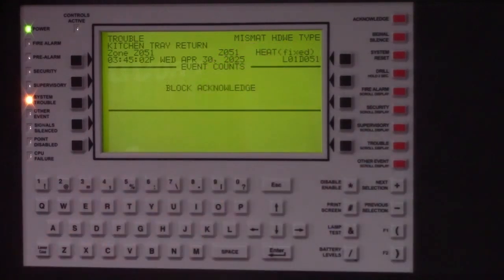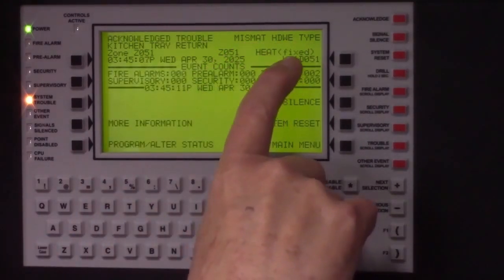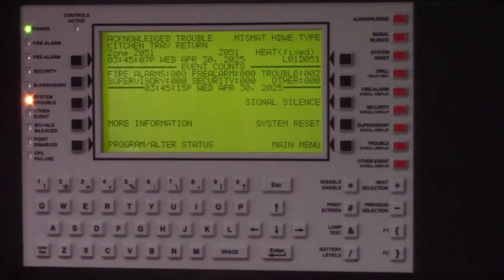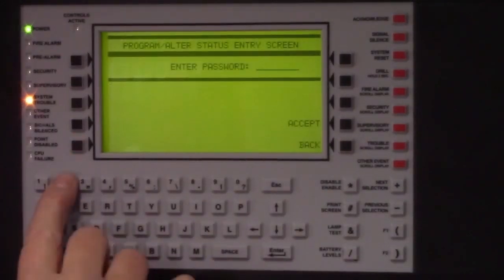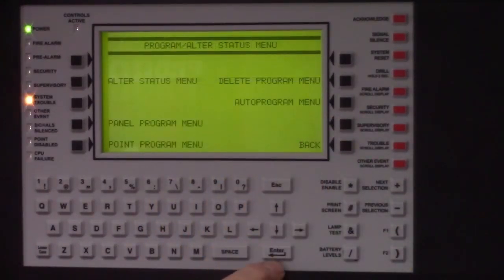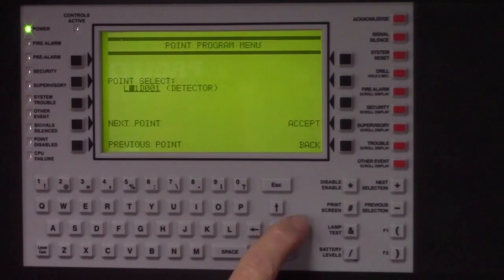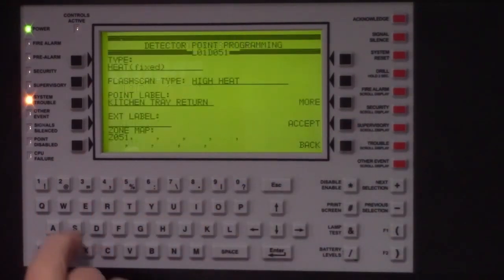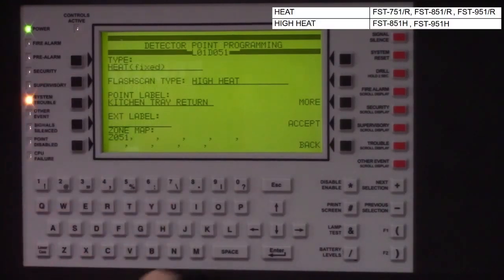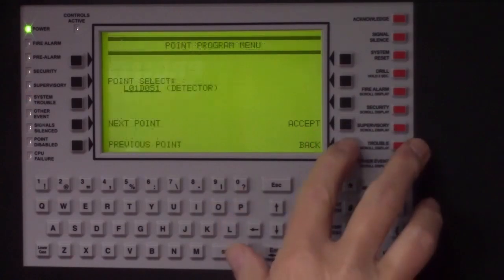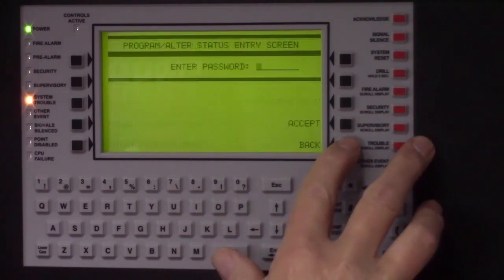We need to re-enter program mode and fix detector 51 on loop 1. To correct it, go back into program alter status. Enter your password. Enter edit detector 51. Change that flash scan type to heat. And exit the program menu. The system will initialize.